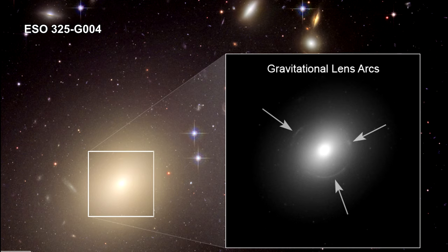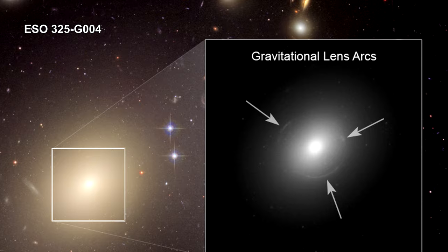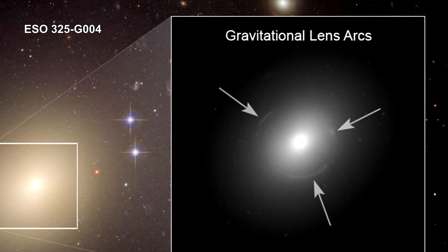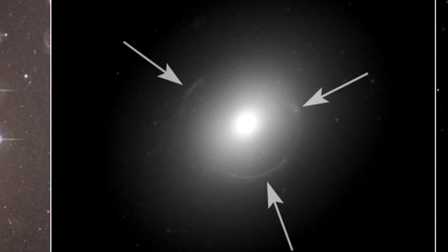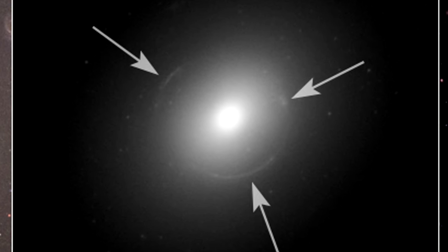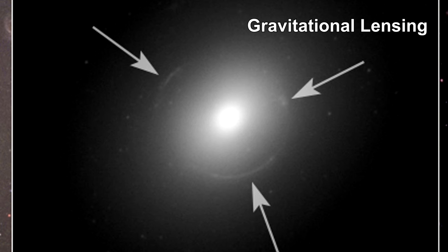You'll remember the Einstein ring we saw around ESO 325-G004 in our segment on Local Superclusters. The ring was the image of a more distant galaxy. The arc shape was created by the bending of the background galaxy's light by the gravity of the massive foreground galaxy. The process is called gravitational lensing because the mass between us and the background galaxy behaves just like an optical lens.